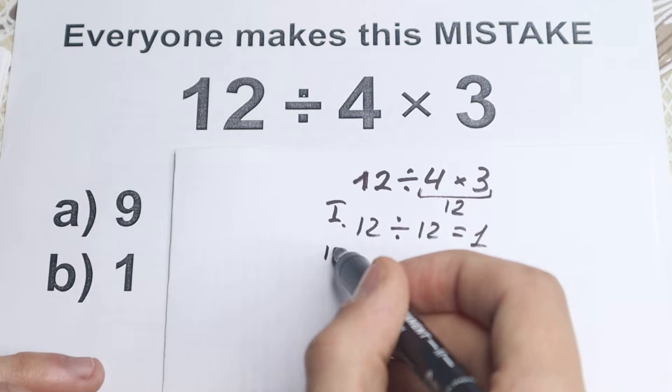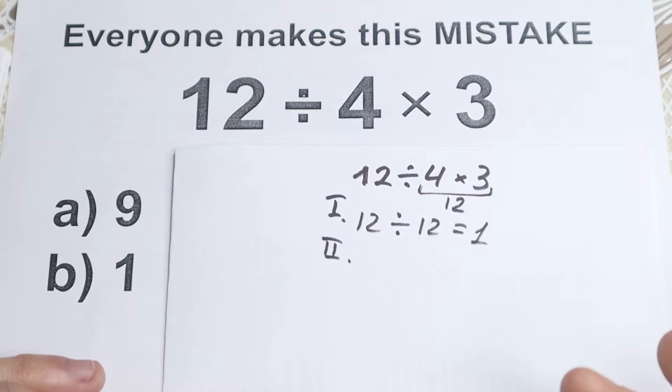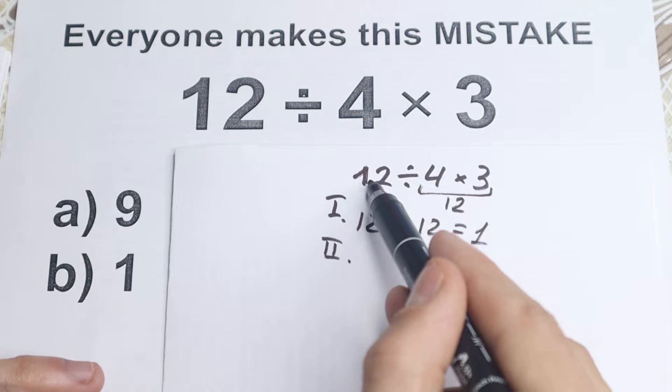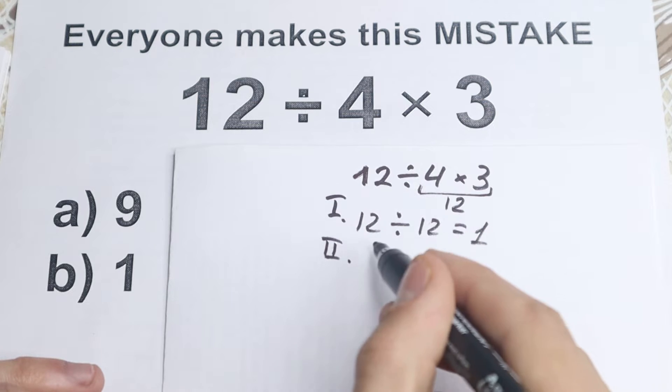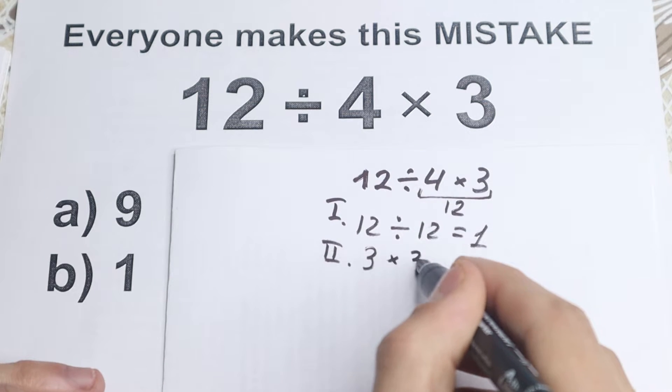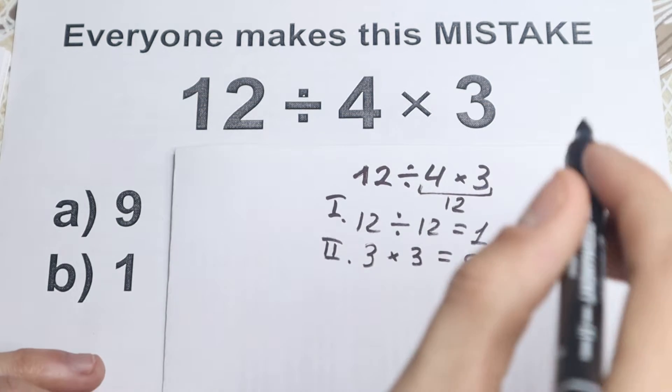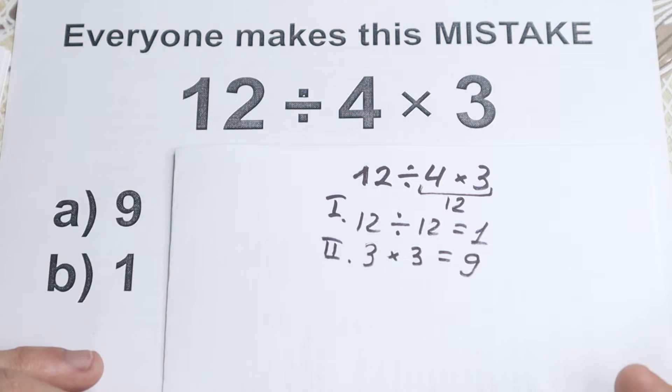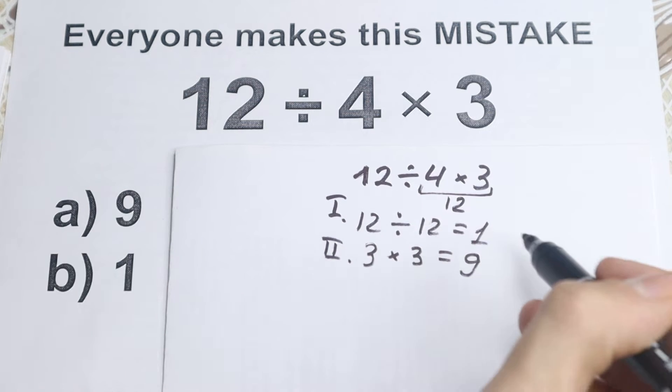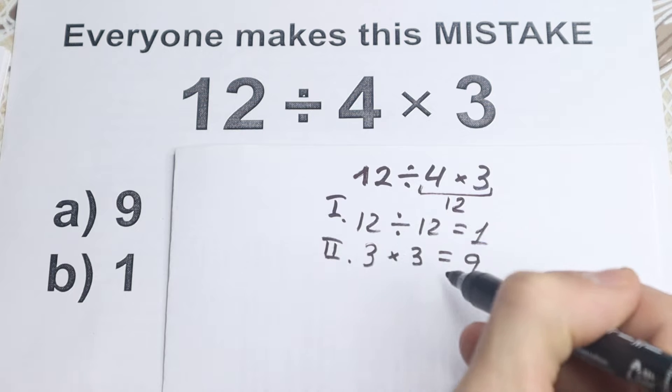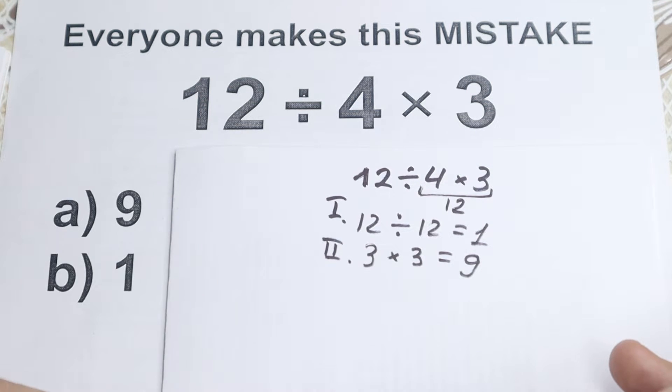The second approach to this problem is to divide at first, because if we divide at first, we will have 12 divided by 4 equal to 3, and 3 times 3 equal to 9. As you can see, whatever order we select is going to create a different answer. Completely different answer. First one, 1, and second case equal to 9. So what is the correct answer to this problem?